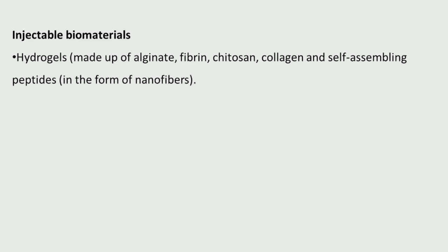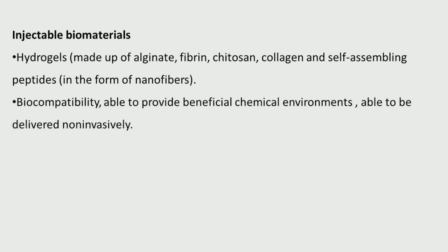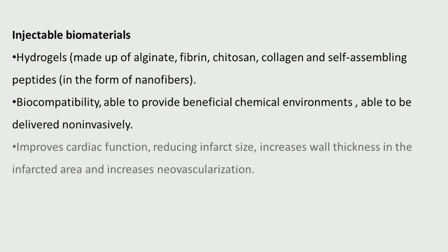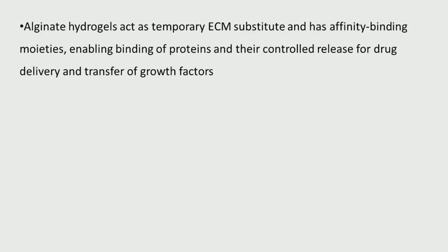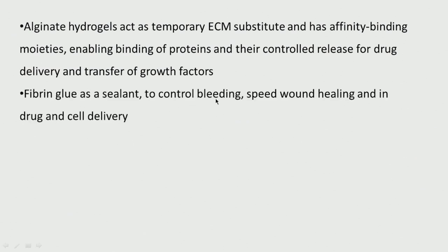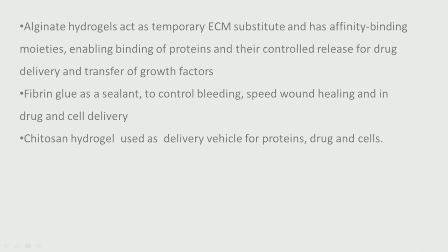Injectable biomaterials like hydrogels — made of alginate, fibrin, chitosan — are biocompatible and provide a good chemical environment for drug delivery. They can improve cardiac function, reduce infarct size and increase wall thickness in the infarcted area. Alginate hydrogels are used as temporary ECM substitutes and have affinity binding moieties enabling protein binding for controlled drug release. Fibrin glue acts as a sealant — since fibrin forms blood clots, it can prevent bleeding, speed up wound healing, and assist in drug and cell delivery. Chitosan hydrogels are used for delivery of proteins, drugs and cells.